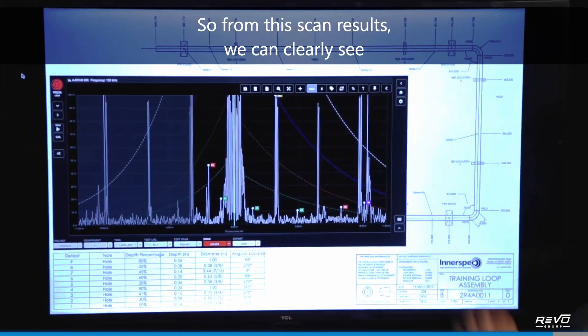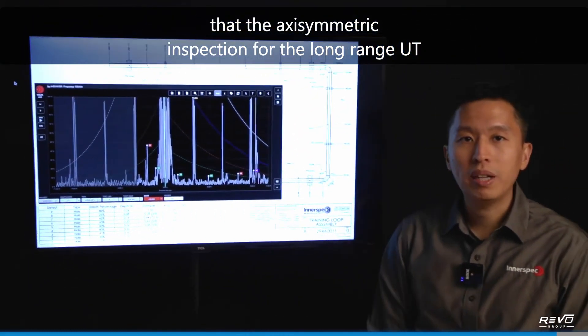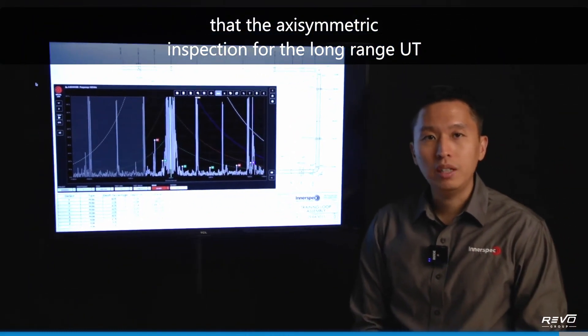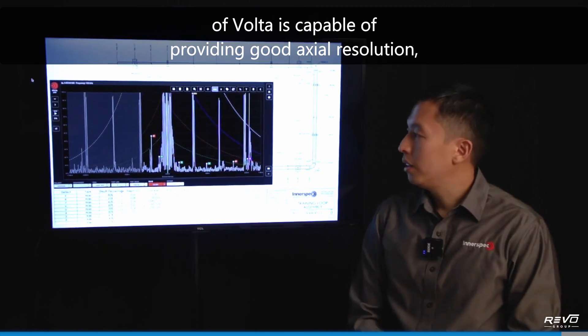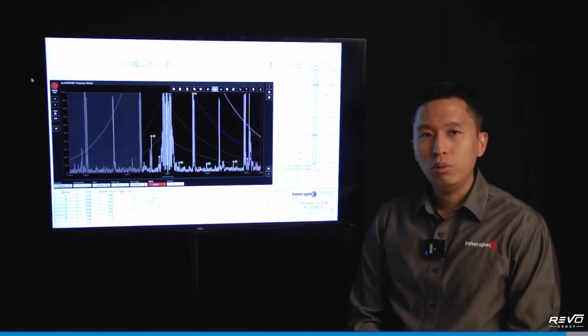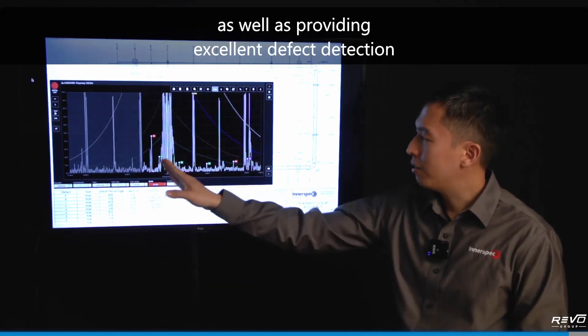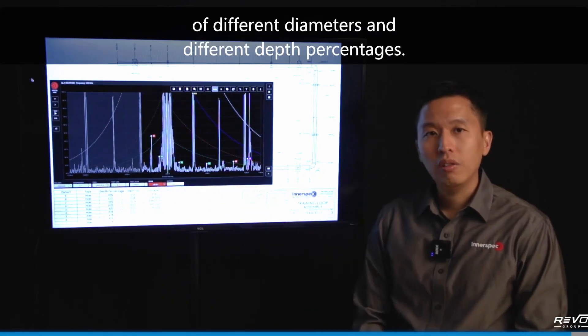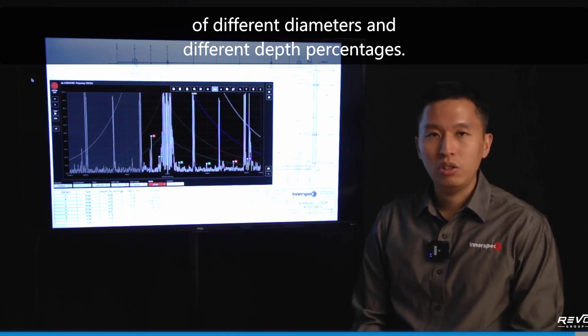So from this scan results we can clearly see that the axisymmetric inspection for the long range UT of Volta is capable of providing good axial resolution as well as providing excellent defect detection of different diameters and different depth percentages.